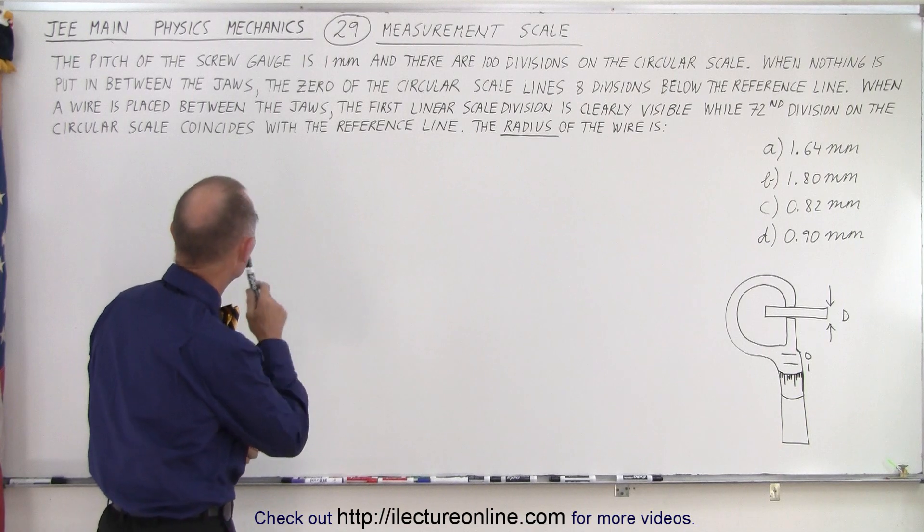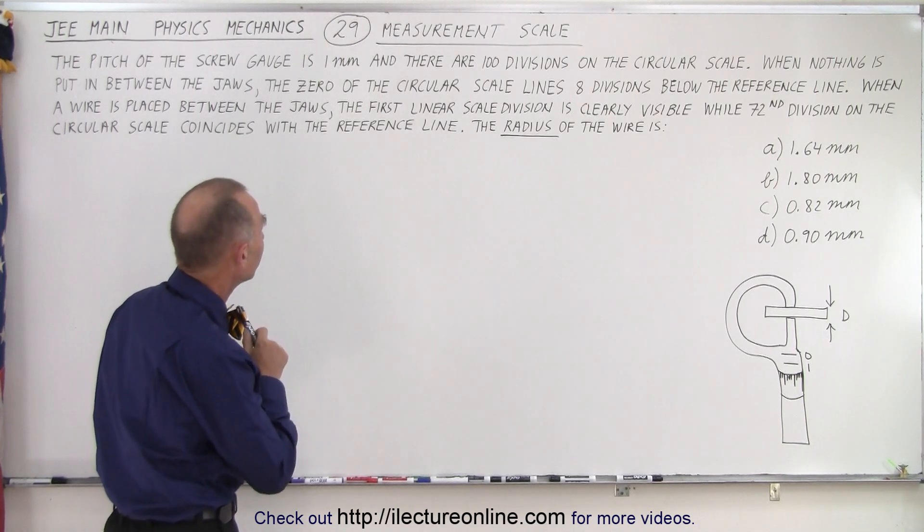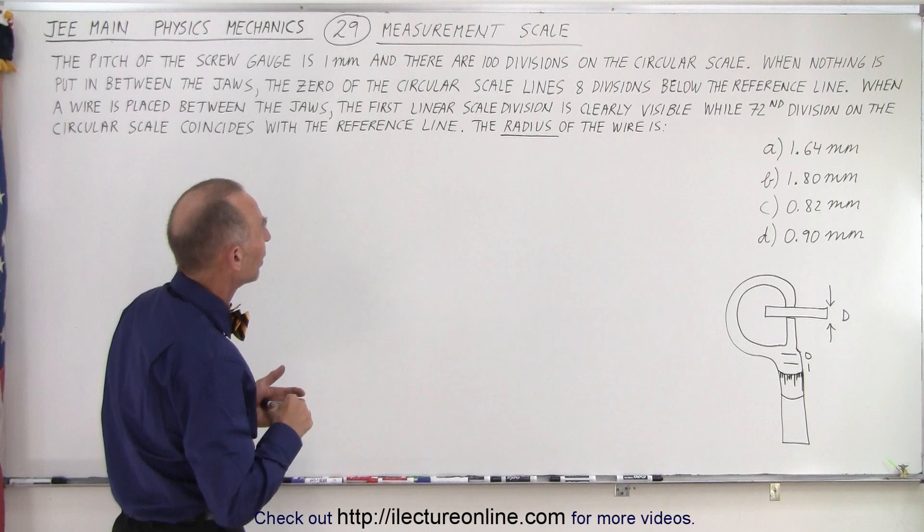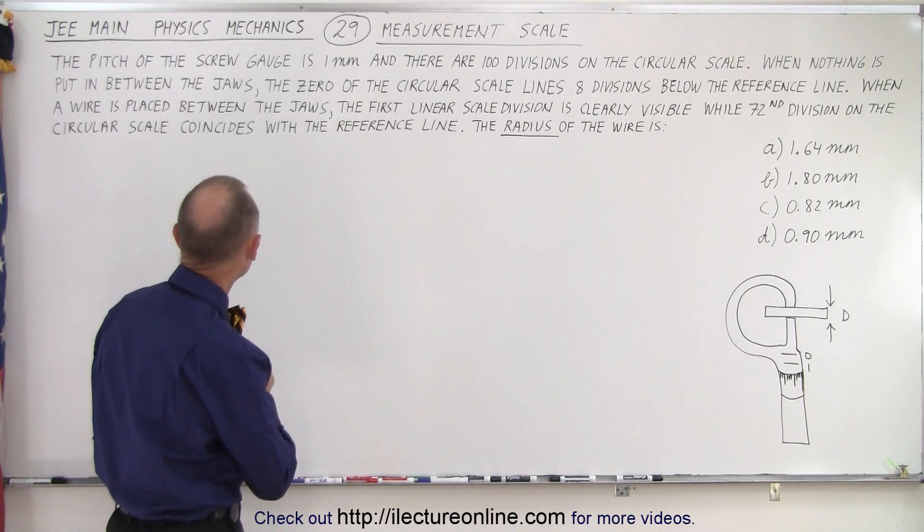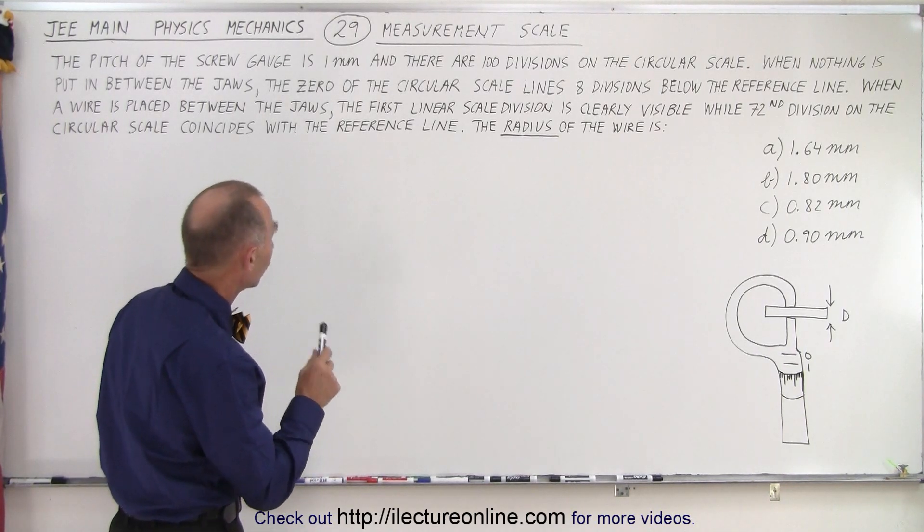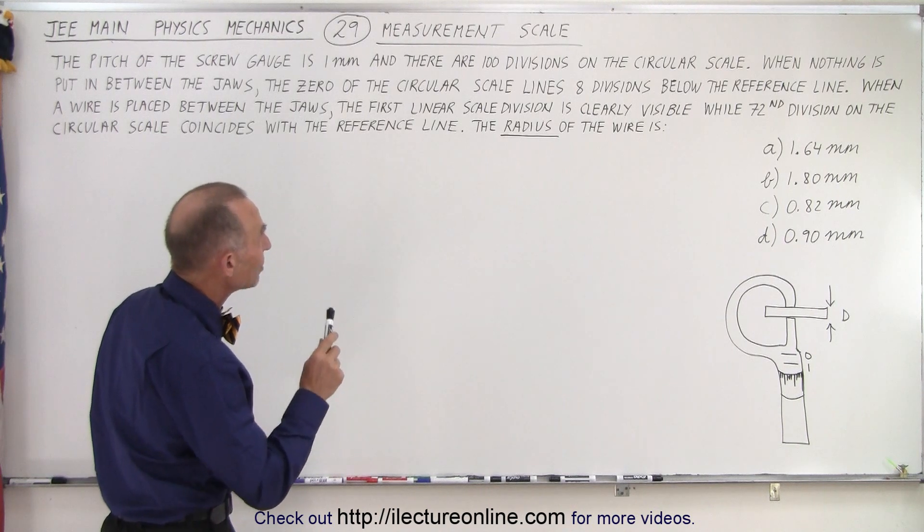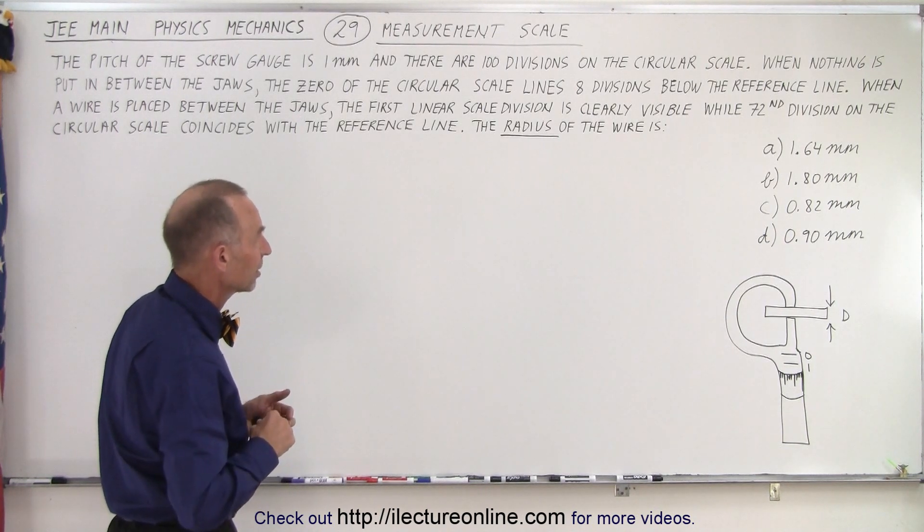The problem states the following: the pitch of the screw gauge is one millimeter and there are 100 divisions on the circular scale. When nothing is put in between the jaws, the zero of the circular scale lines eight divisions below the reference line.